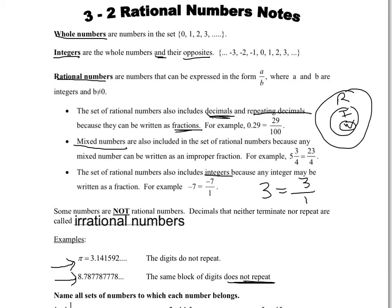Irrational numbers would fall outside — they would not fall into the group of rationals, integers, or wholes. They're completely separate.